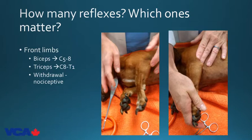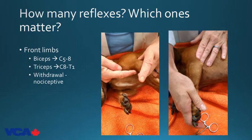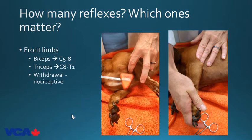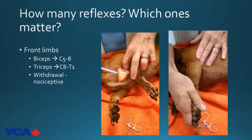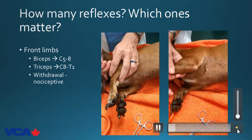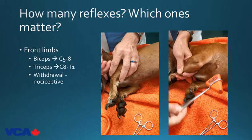For thoracic limb reflexes, we assess biceps and triceps. The biceps is a flexor, so extend the tendon for maximum stimulus — place pressure behind the elbow, wrap a finger around the tendon, stimulate the finger, and look for biceps contraction or toe extension. This tests the musculocutaneous nerve. The triceps is a radial nerve reflex, C8 to T1 mainly. It's an extensor, so flex the elbow, abduct it slightly, and tap the tendon at its insertion with a pleximeter hammer, looking for contraction of a triceps belly.